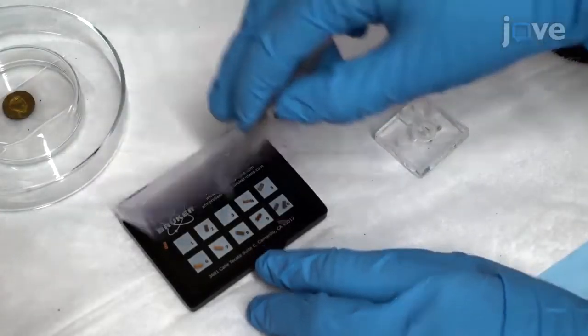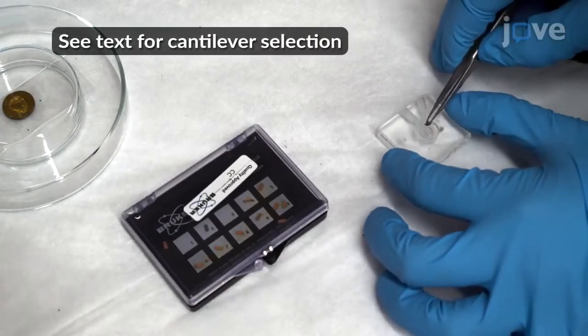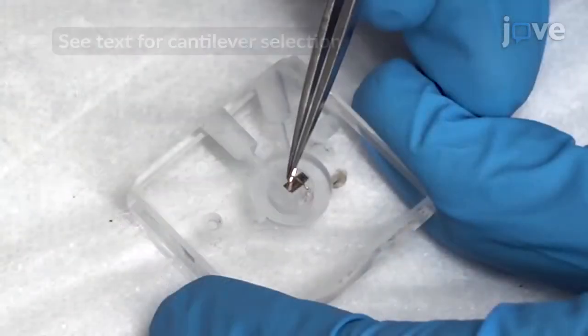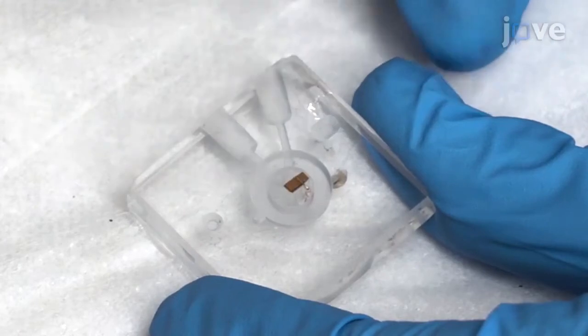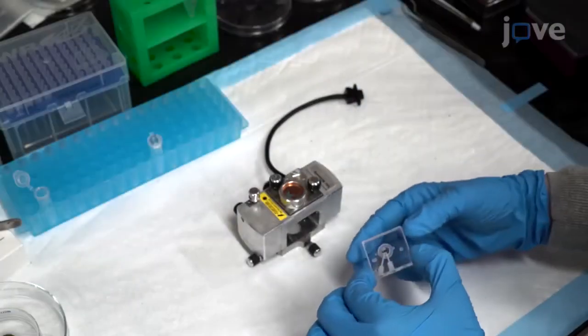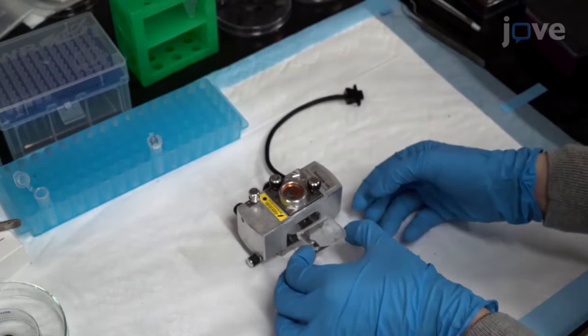First, carefully pick up the cantilever by the end and place it in the probe holding cell. Ensure that the cantilever is firmly seated. Then place the holding cell in the AFM head.